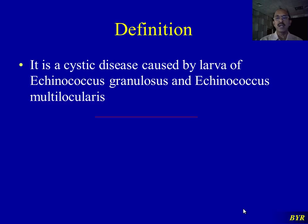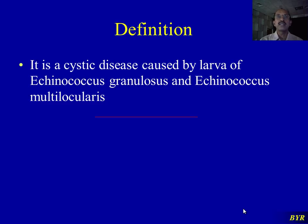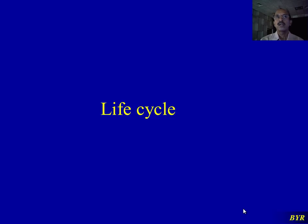This cystic disease is caused by the larvae of Echinococcus granulosus and Echinococcus multilocularis — these two parasites are tapeworms. The adult tapeworm lives in canines and sheep, while the larval form lives in human beings. The larval form of this parasite manifests as a cyst called a hydatid cyst, which looks like a big drop of water.